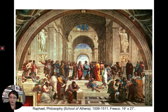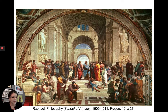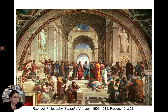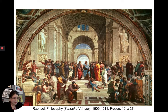The central two figures are Plato and Aristotle. Plato holds his book Timaeus and points to heaven, indicating his heavenly inspiration. Aristotle holds his Nicomachean Ethics and points down to the earth, basing his work on observations of reality and human nature rather than heavenly influence. Some of the great minds portrayed were also portraits of Raphael's peers — for example, Heraclitus is probably based on Michelangelo.